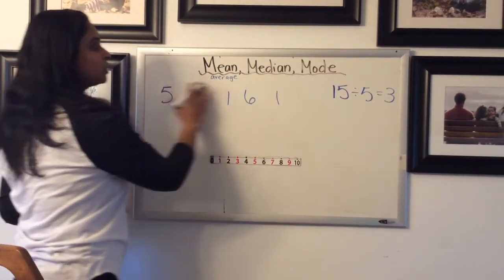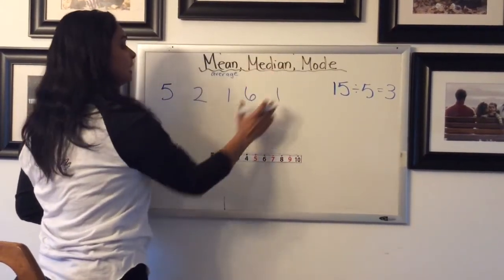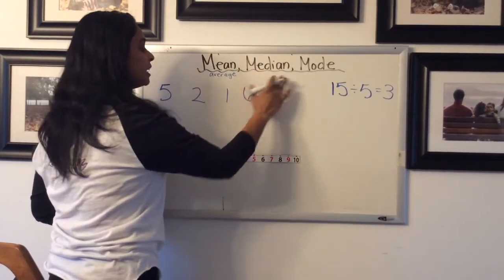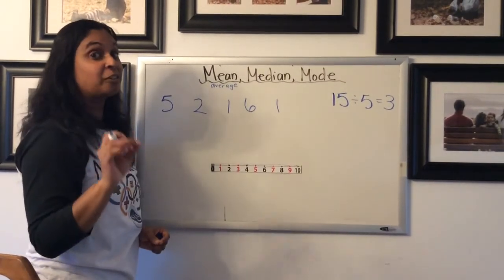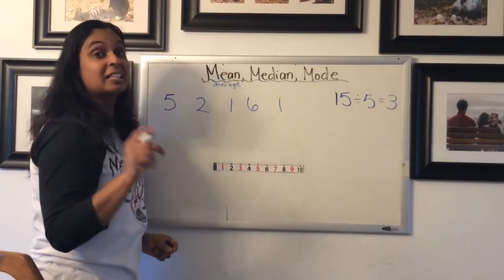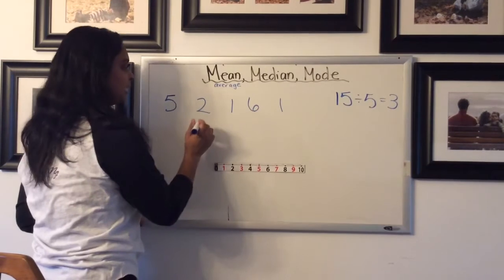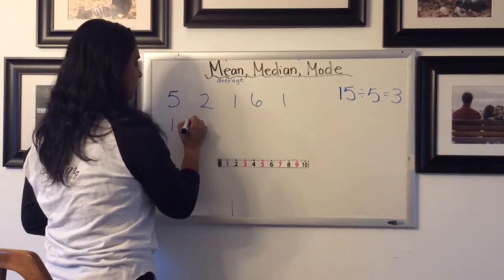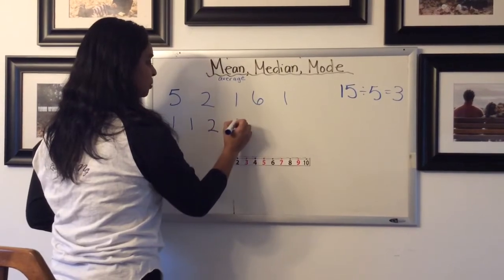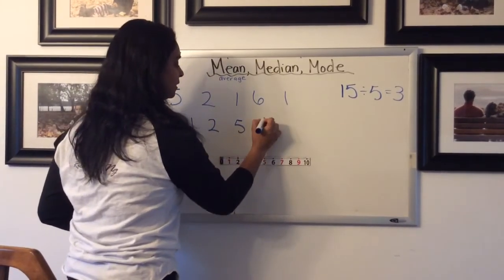So now we'll talk about the median. Now to find the median of a set of data, there's something you have to do first. And that is put your data values in order from least to greatest. That is a key step when you're finding the median. So I'm going to go ahead and do that here: 1, 1, 2, then 5, then 6.